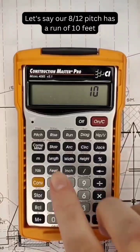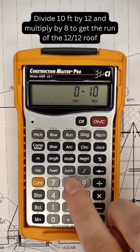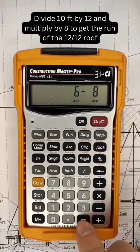Let's say our 8-12 pitch has a run of 10 feet. Divide 10 feet by 12 and multiply by 8 to get the run of the 12-12 pitched roof.